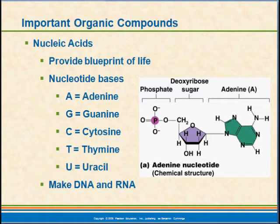We have adenine, guanine, cytosine, thymine, and uracil. In DNA, that's adenine, guanine, cytosine, and thymine. In RNA, it's adenine, guanine, cytosine, and uracil. So we swap out thymine and uracil between DNA and RNA.